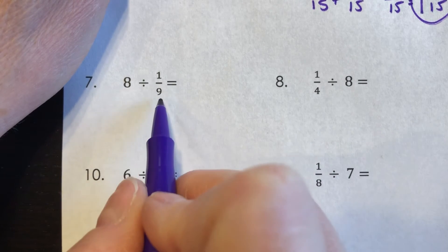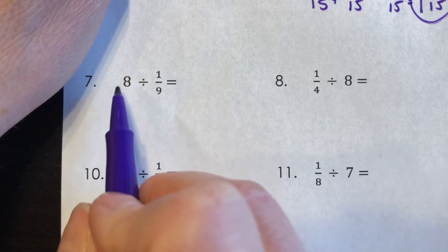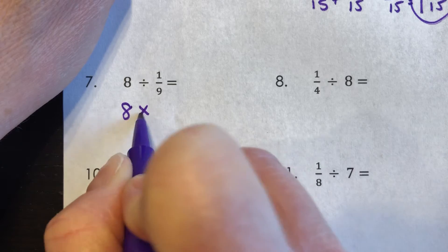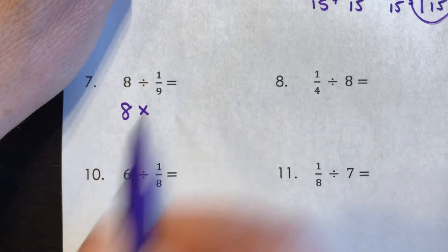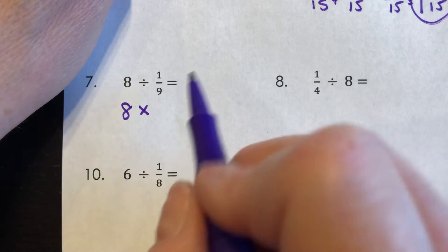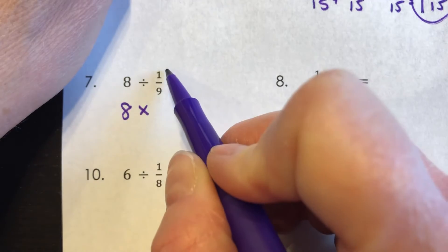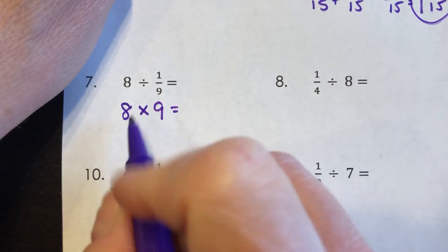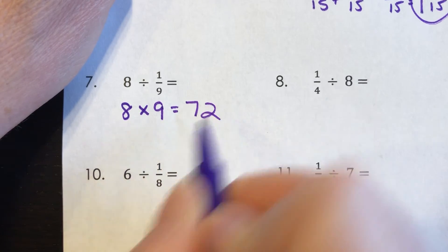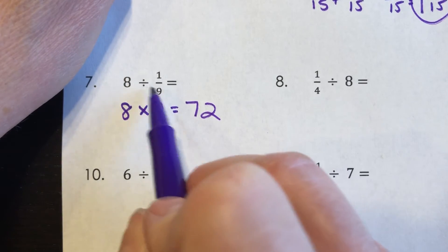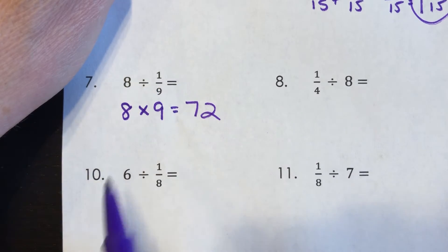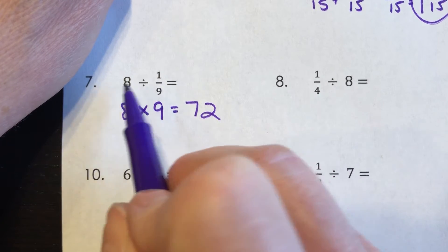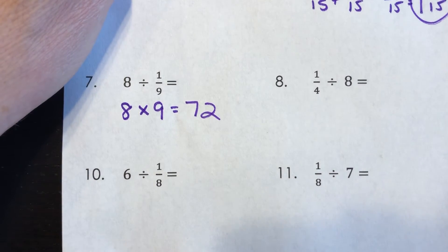So eight divided by one ninth means I want to know how many one ninths there are in eight. I can get this answer by doing eight times the reciprocal of one ninth. So the reciprocal of one ninth would be nine over one. And nine over one is the same as nine. So the answer to number seven should be 72. And think about it. One whole would have nine one ninths in it. So if one has nine, then eight would have eight times nine. It just makes sense, doesn't it?